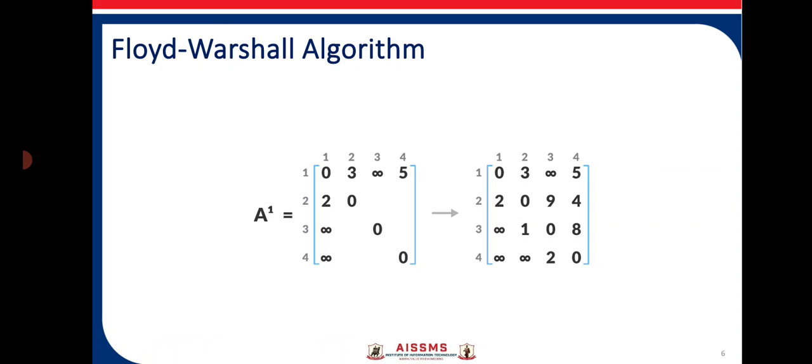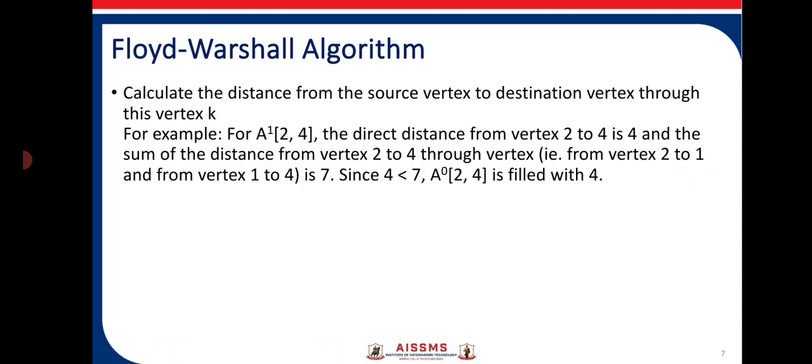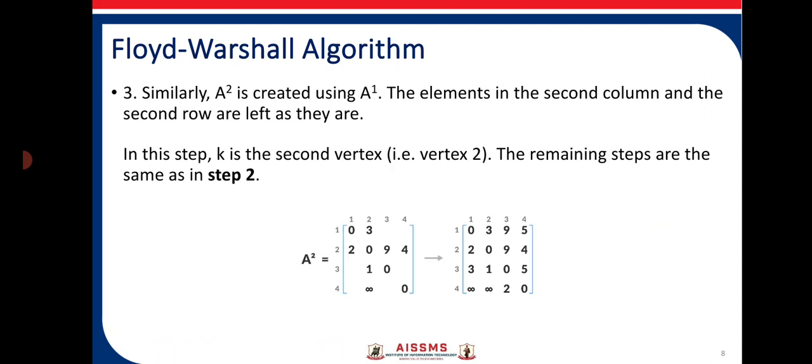So A1 is filled as: 1→1: 0, 1→2: 3, 1→3: infinity, 1→4: 5. The rest of the edges are filled using intermediate node 1: 2→1: 2, 2→2: 0, 2→3: 9, 2→4: 4. Then 3→1: infinity, 3→2: 1, 3→3: 0, 3→4: 8. And 4→1: infinity, 4→2: infinity, 4→3: 2, 4→4: 0. For example, the direct distance from vertex 2 to 4 is 4, and the sum through vertex 1 is 7; since 4 is less than 7, we keep 4.